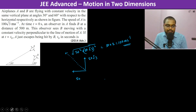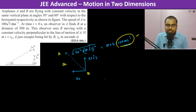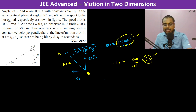So therefore, B is approaching A with a speed of 100 meter per second and the initial distance is 500 meters. So therefore, the time T-naught is going to be 500 meters divided by 100 meter per second, which is 5 seconds. So therefore, 5 seconds is the answer.